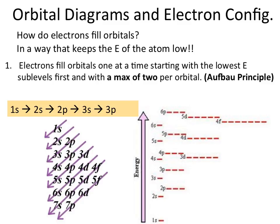So how do electrons fill orbitals? Basically anything that is going to happen in an atom is going to happen in a way that keeps the energy of that atom low. The Aufbau principle says that electrons are going to fill orbitals one at a time and they're going to start with the lowest energy sub-levels first. We start at 1s and make our way up. As you get farther away from the nucleus you're getting higher in energy, so we start at the bottom floor and fill up progressively.